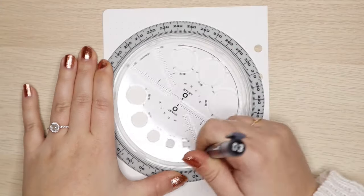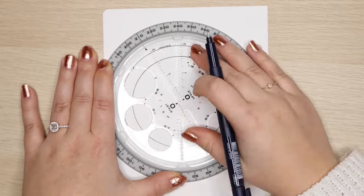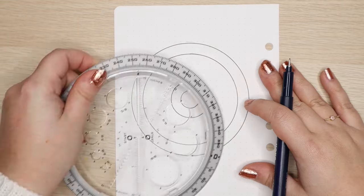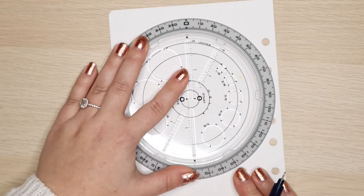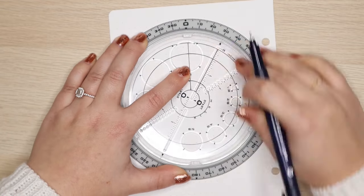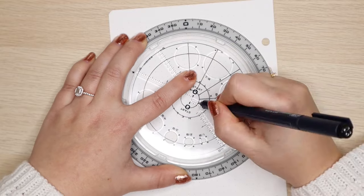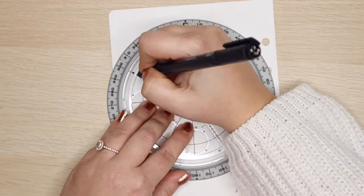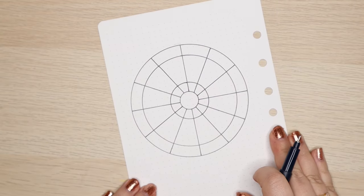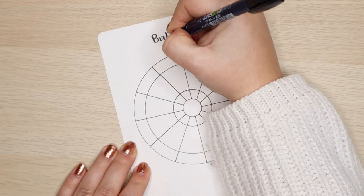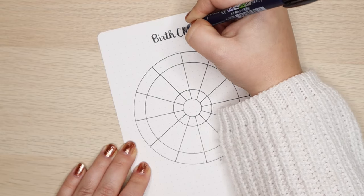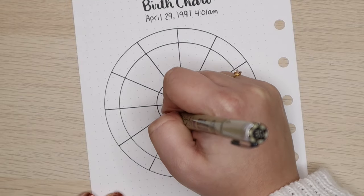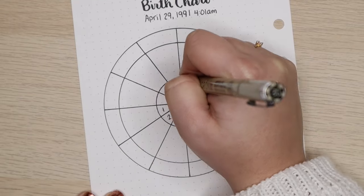This next spread is something I'm so excited to have permanently in my bullet journal. And that is my birth chart. Last year, I did a video reviewing the magic of eye astrological planner. And in that video, I was able to map out my birth chart. So for an accurate birth chart, you need to know the date, the time, and the location you were born. I will link a site in the description that maps your birth chart for you as long as you have those three pieces of information.